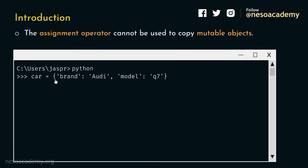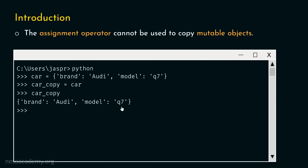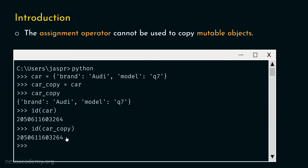Let's say we want to create a copy of this object. For this, we type car_copy equal to car. Now car_copy is also pointing to the same object. Let's hit enter and type car_copy — we get the same dictionary with two key-value pairs: brand Audi and model Q7. To verify that car_copy and car are pointing to the same object, we use the id function. We type id(car) and get this id, then id(car_copy) and get the same id — they are exactly the same.